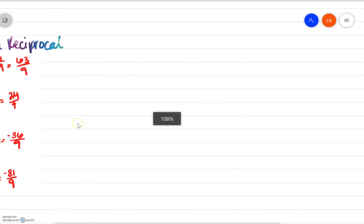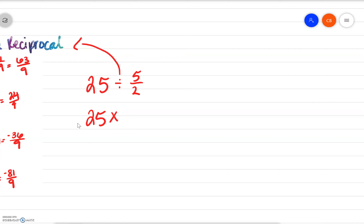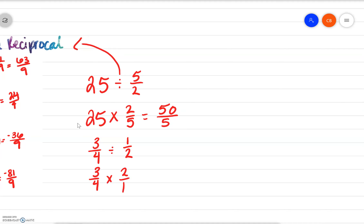What if we already have a fraction? Let's say we have 25 divided by 5 halves. That division means we're multiplying by the reciprocal, so 25 times the reciprocal of 5 over 2, which would be 2 fifths. If we simplify, 25 times 2 is 50 over 5. What if the first number is a fraction? Let's go 3 fourths divided by 1 half. Whenever we see that division sign, we have 3 fourths times the reciprocal, which would be 2 over 1. Simplified: 3 times 2 is 6 over 4.